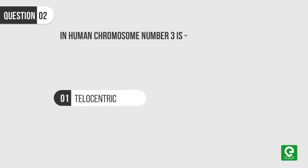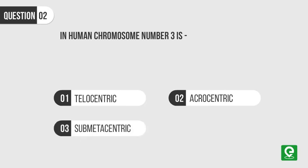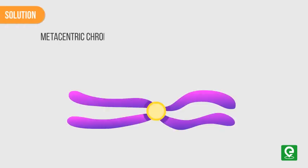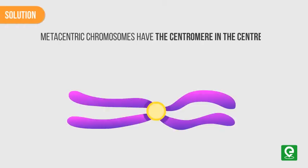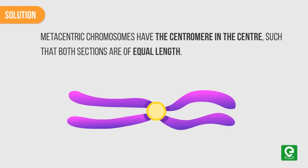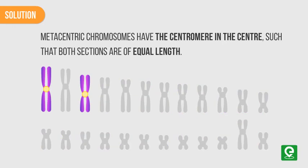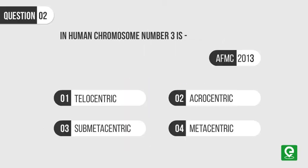Question two: In humans, chromosome number 3 is — first telocentric, second acrocentric, third sub-metacentric, or fourth metacentric? This question was asked in AFMC 2013. Solution: Metacentric chromosomes have the centromere in the center such that both sections are of equal length. Human chromosomes 1 and 3 are metacentric. Hence option four is the correct answer.